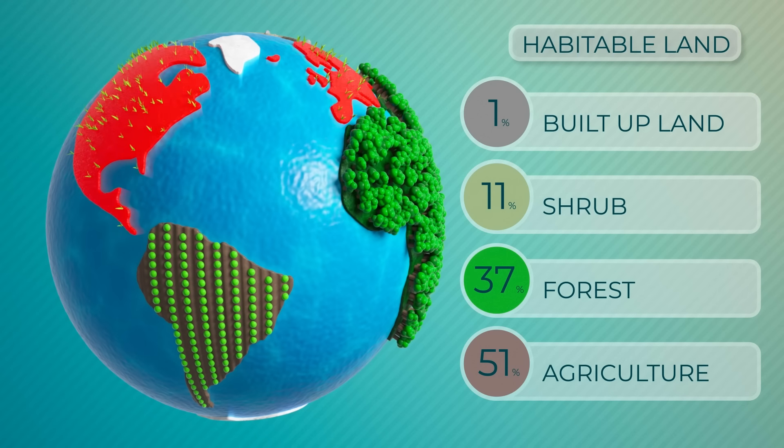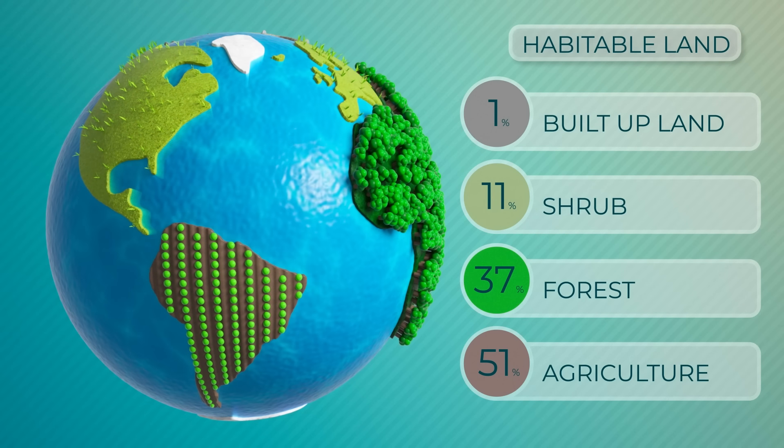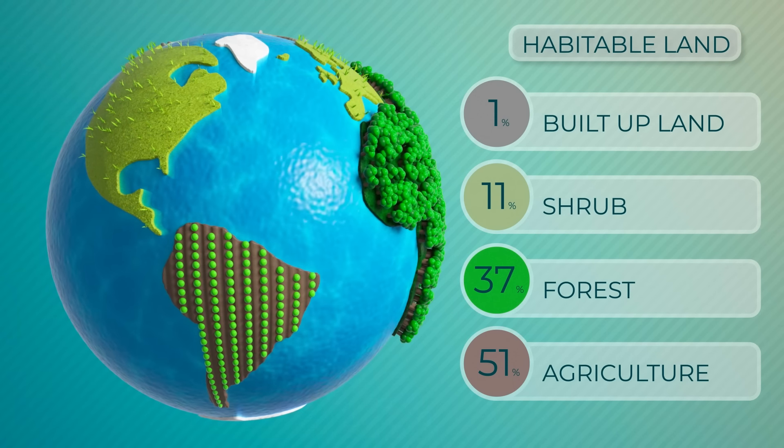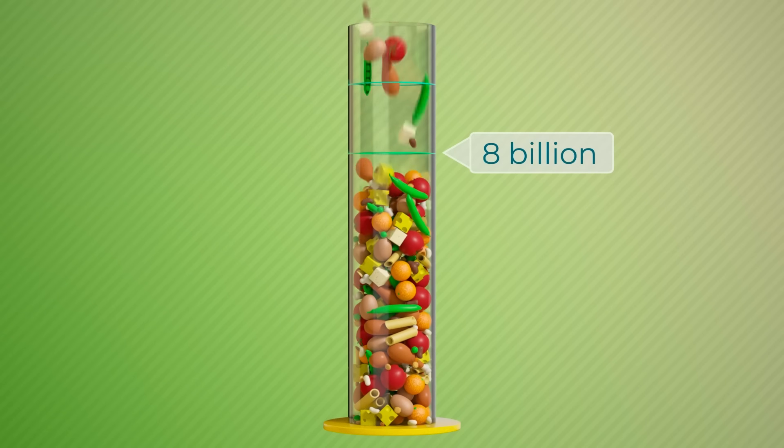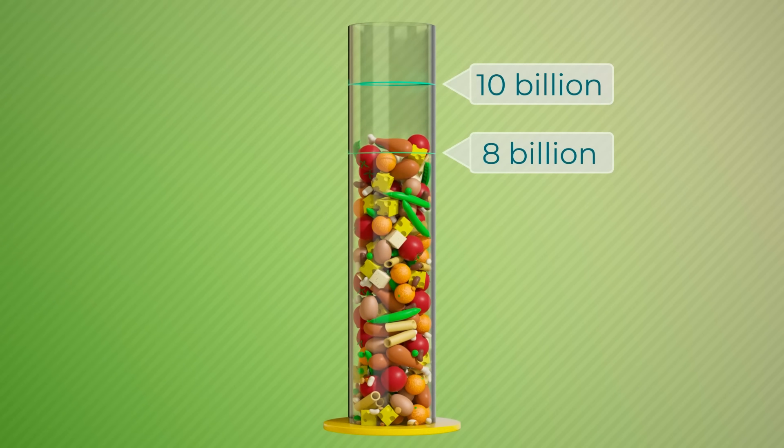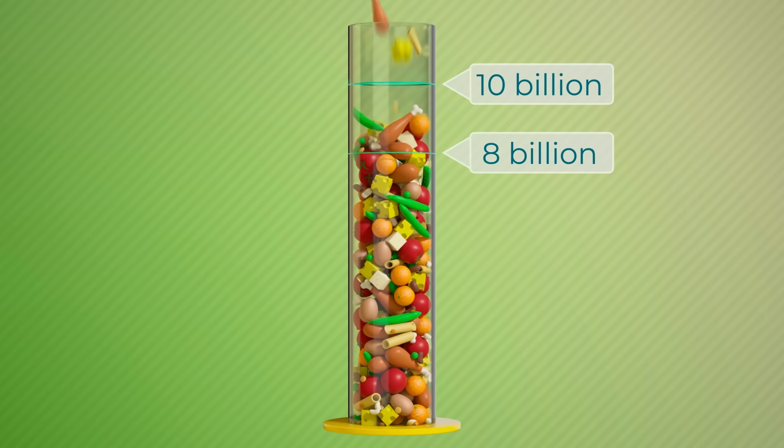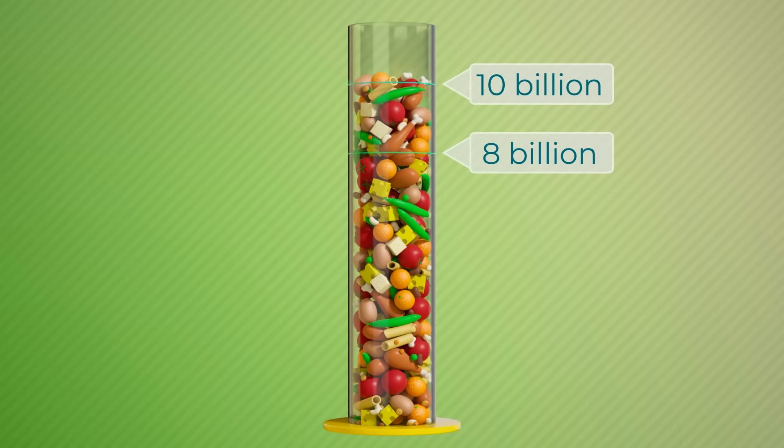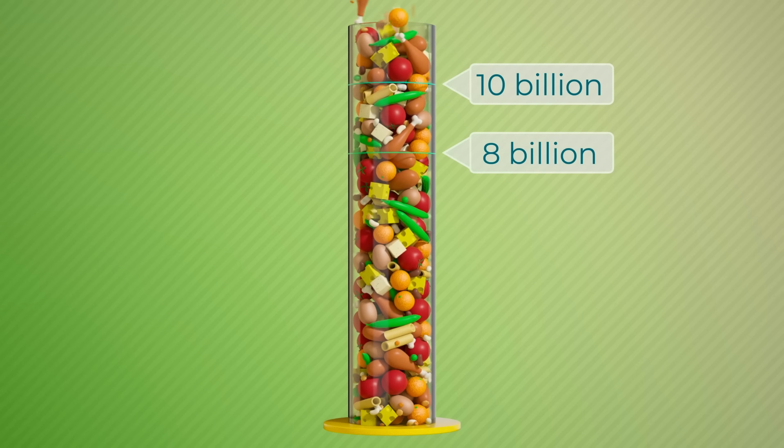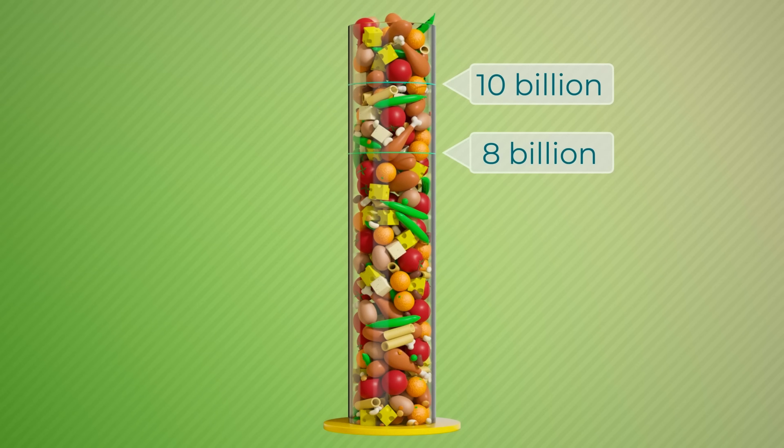About two-thirds of agricultural land is used for grazing, while a third is cropland. We currently use this land to feed 8 billion people. To feed 10 billion in a similar way, we would need to produce 25% more calories. But diets are expected to change with economic development, which would make the amount of produced calories even higher.